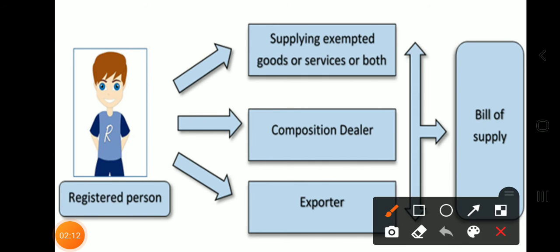Next, we have Bill of Supply. Registered persons supplying exempted goods or services or both, composition dealers, and exporters need to issue a Bill of Supply.